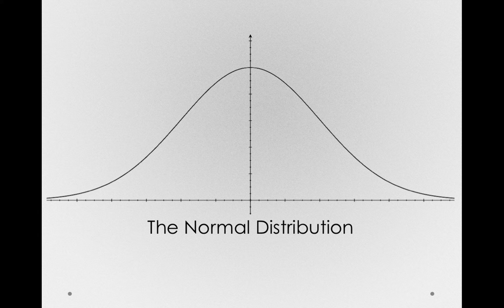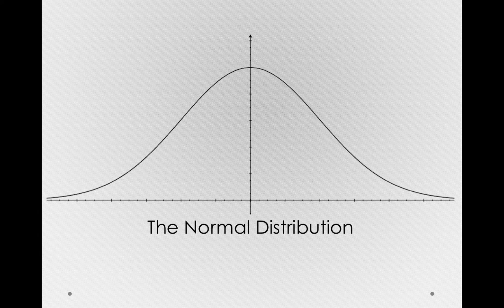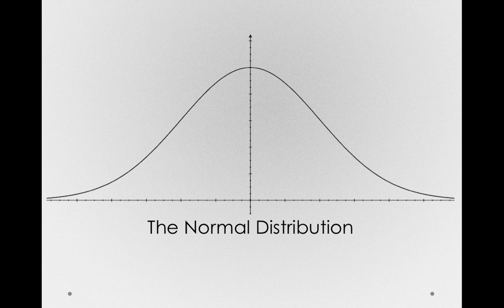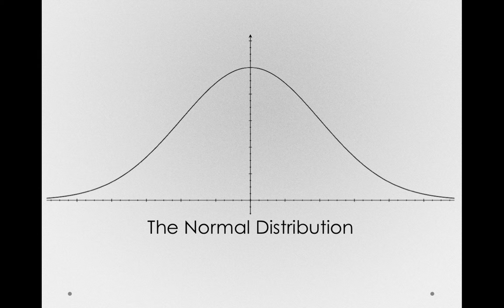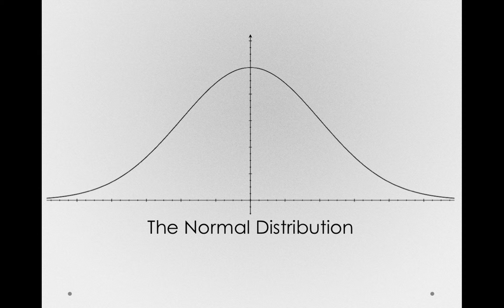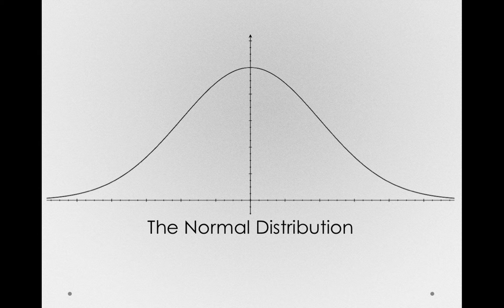The normal distribution has an incredibly fundamental and special place in statistics. It is one of a small set of attractor distributions, a distribution that draws other distributions to it through operations on data, like sums and like averages.